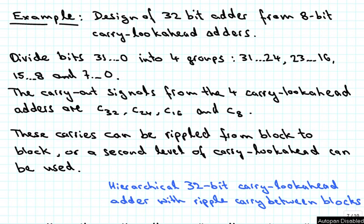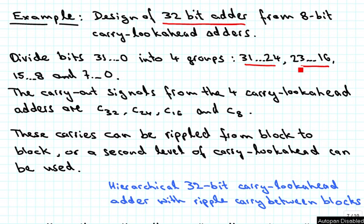We're looking at an example where we want to design a 32-bit adder from 8-bit carry lookahead adders. We divide the bits from 31 to 0 into 4 groups: 31 to 24 (the most significant bit group), then 23 to 16, 15 to 8, and 7 to 0. The carry out signals from the four carry lookahead adders would be C32, C24, C16, and C8.